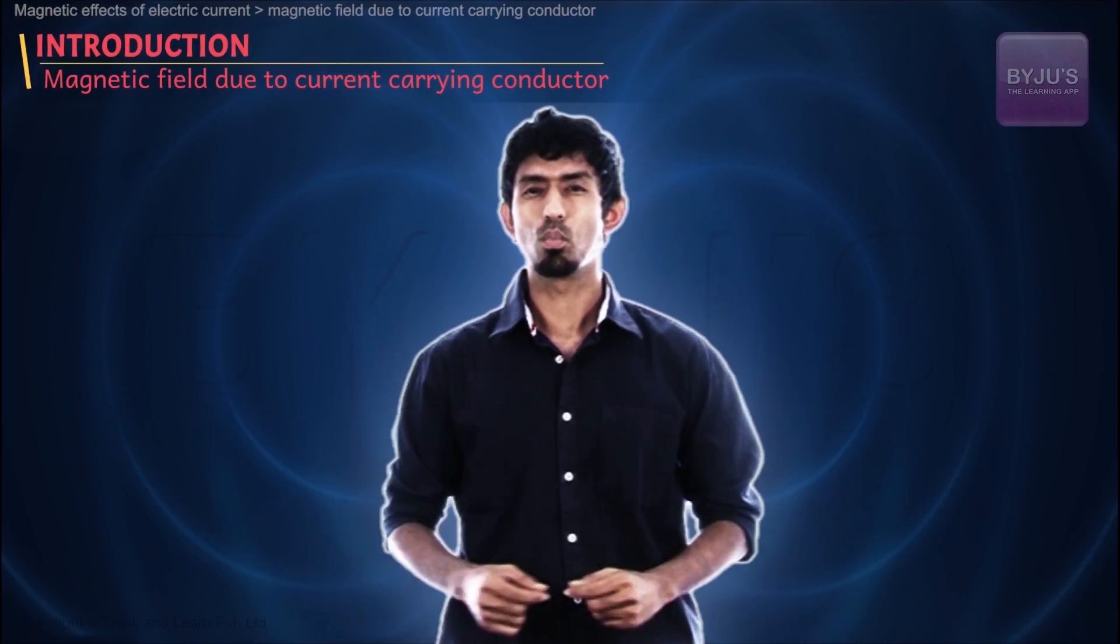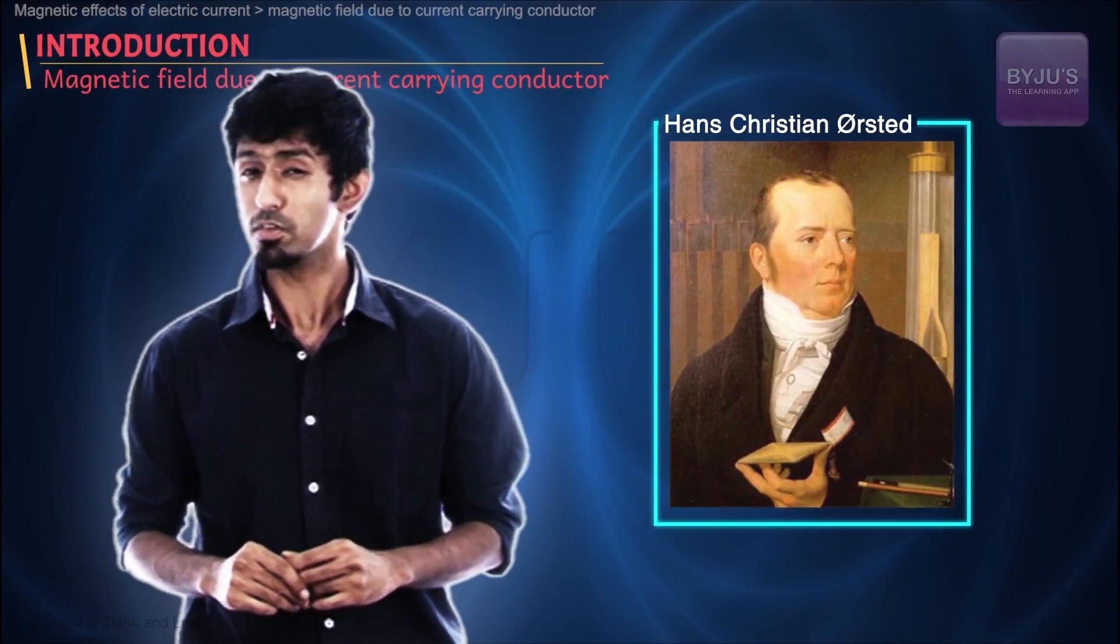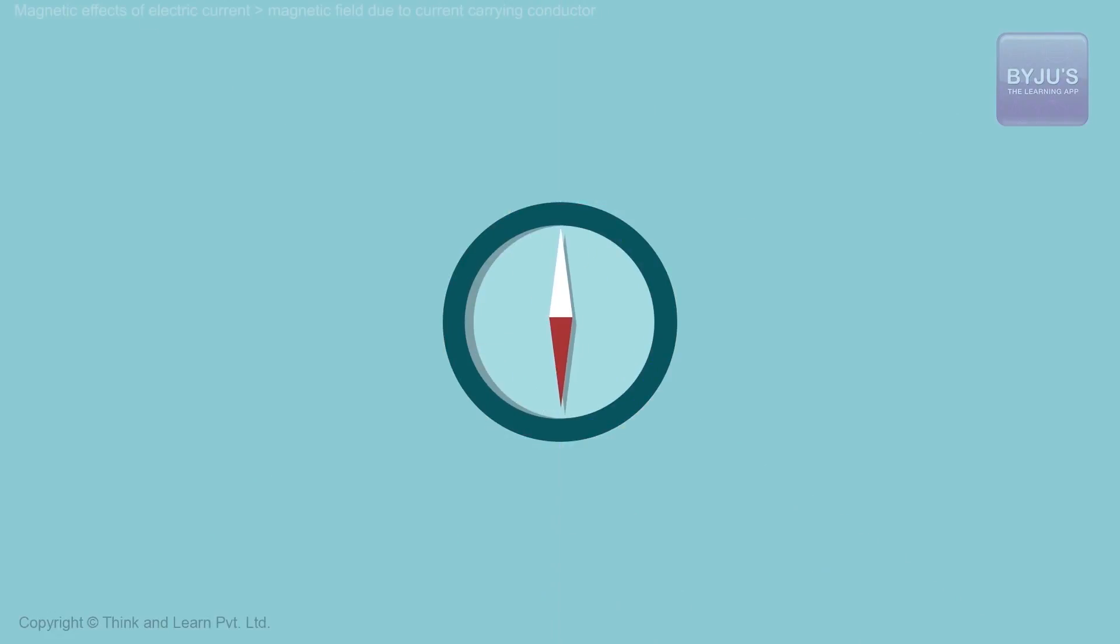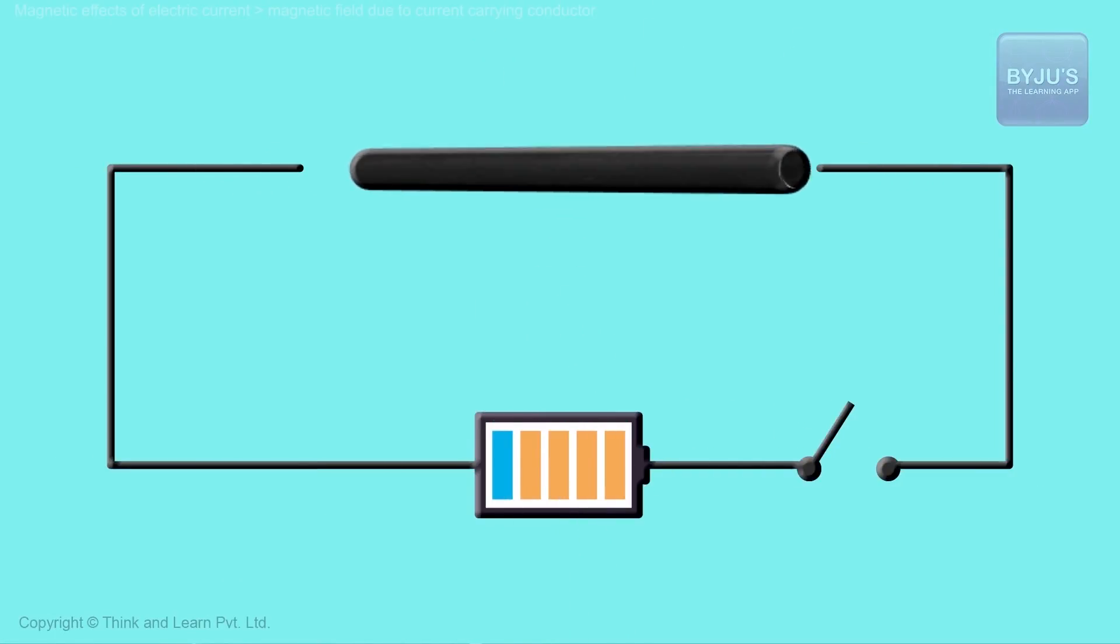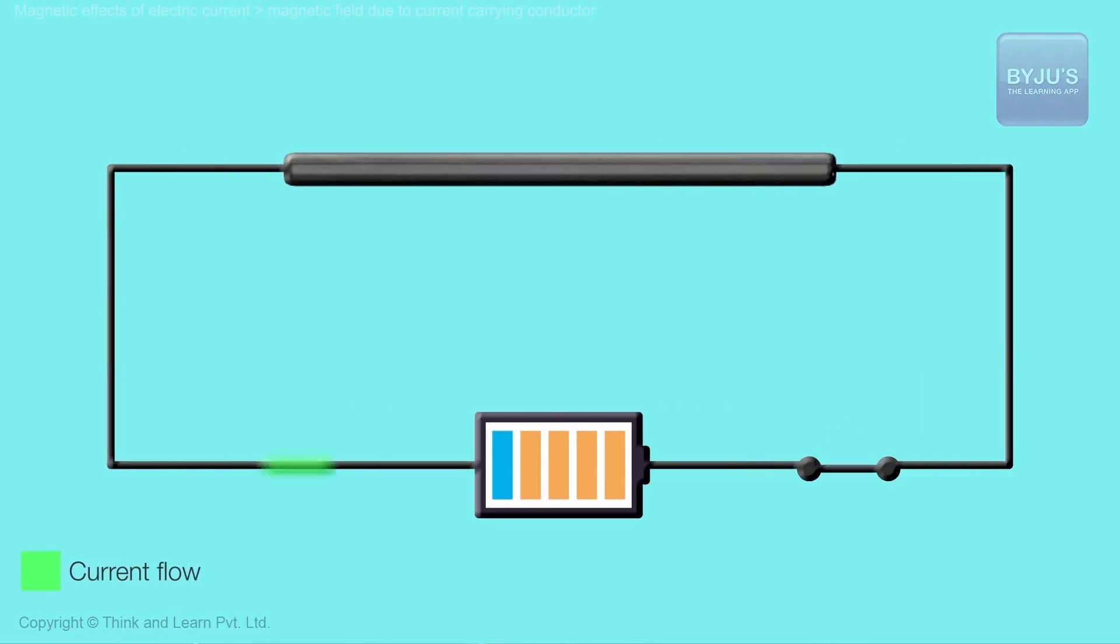Till one man called Oersted in a lecture noticed something extremely fascinating. He noticed that there was a current carrying conductor. We all know what this is, a wire with some current going through it. Put it across a battery, there'll be some current. This we've done in the previous chapter.